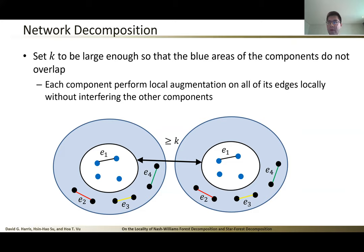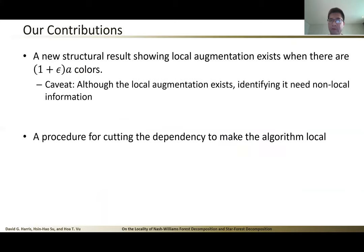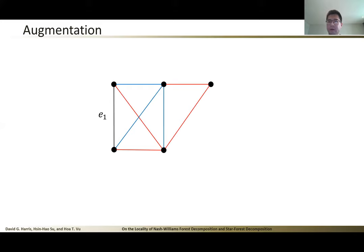However, there are some technical challenges we still have to deal with. The first is that we want to show that this local augmentation exists and it's unclear whether they exist or not. Our first contribution is to show that, to give a structural result showing this augmentation exists. However, there is a caveat. Although it exists, it doesn't mean that you can find it. So this poses another technical challenge. We also develop a procedure to deal with it. The procedure is for cutting the dependency to make the augmentation local, as we will see pretty soon. But before that, we will have to see how the augmentation works in practice for this problem.